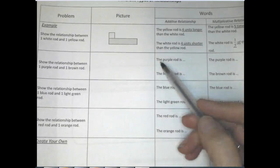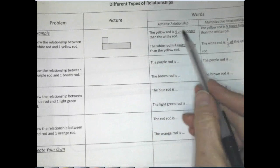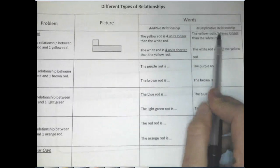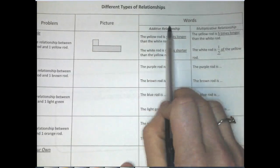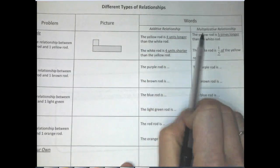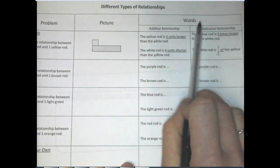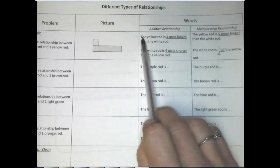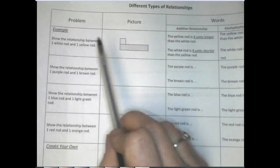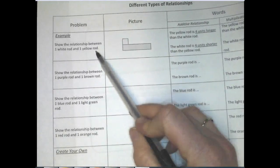Today's lesson was on Additive and Multiplicative Relationships. We talked about how do we think additively and how do we think multiplicatively. We looked at the different relationships with our Cuisinaire rods.